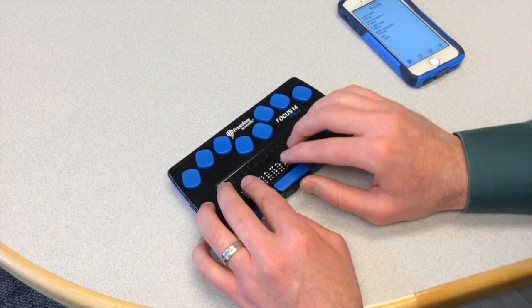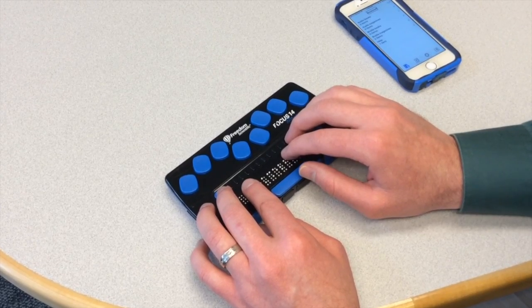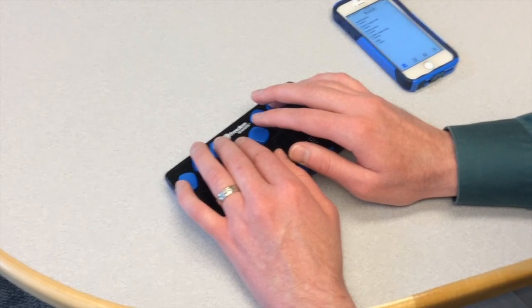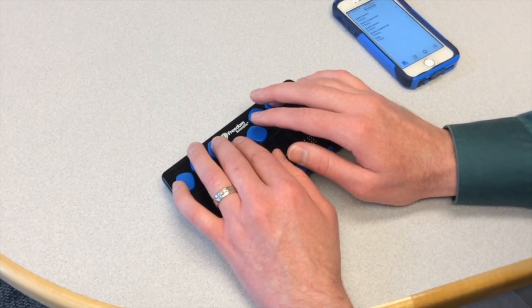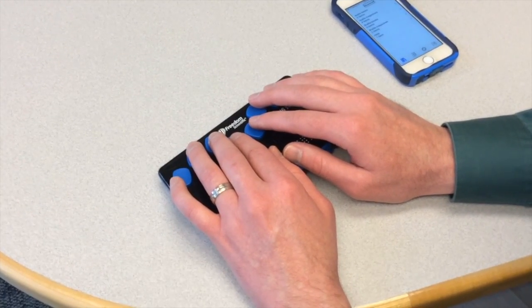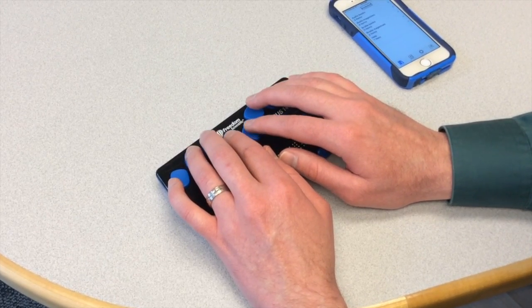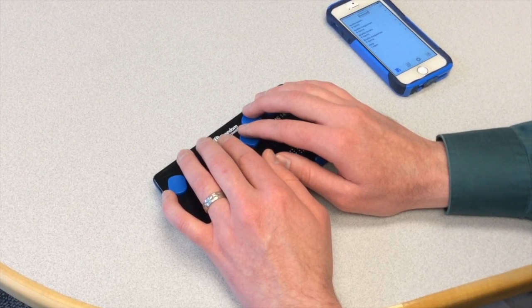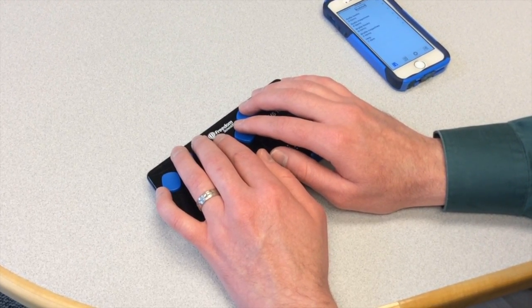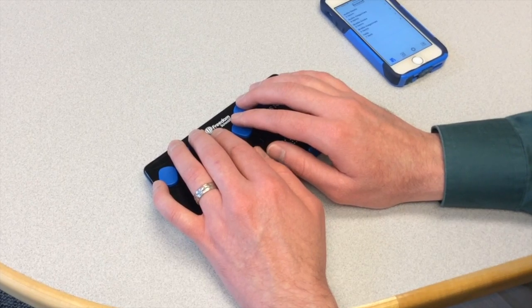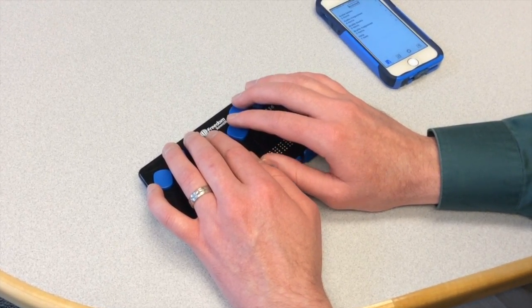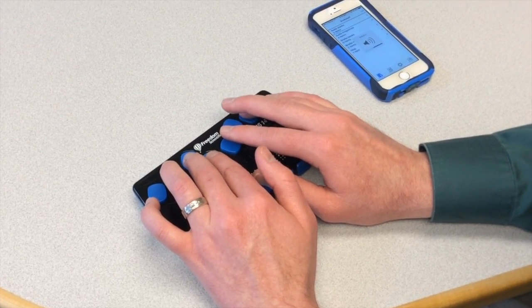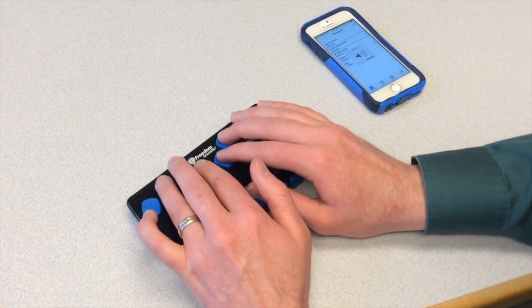Now I could also change the volume of this. To make it softer, I use a GH chord, which is dots 1, 2, 6. To make it louder, I can do an AR chord, dots 3, 4, and 5. I'm going to have it reading so we can hear me change the volume. So I'm going to do an R chord, and it's going softer. Now I'm going to make it louder with the AR chord.